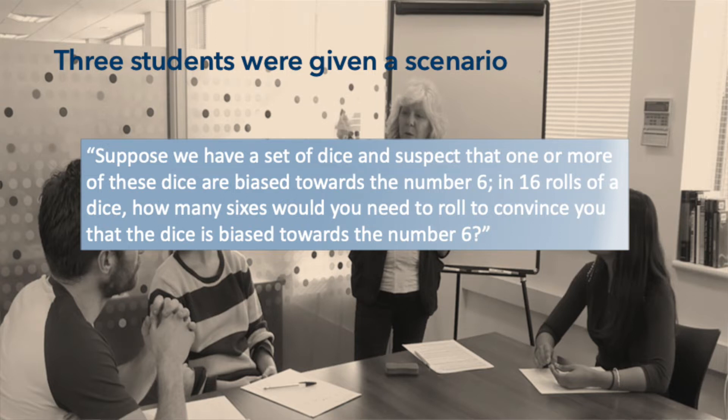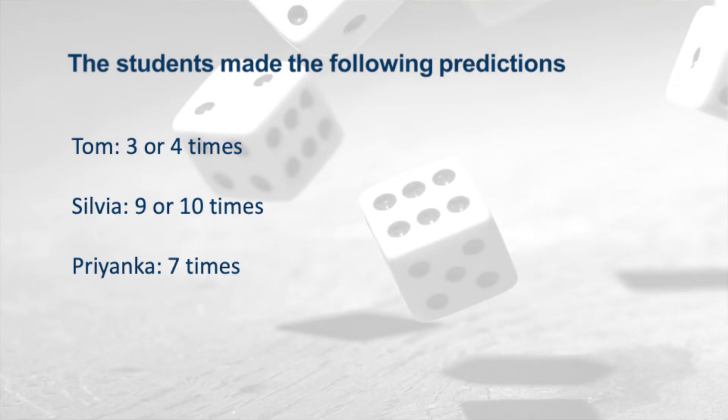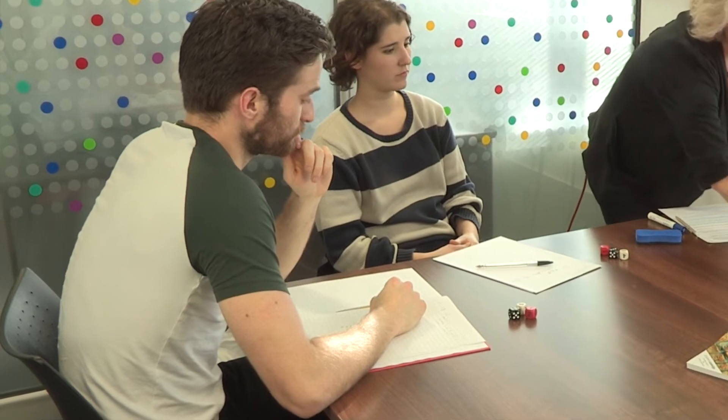Who would like to start? So what I would like you to do then is to take, I will give you 3 dice, 3 different colours because that will make it easy to record. And I would like you to roll each of these dice 16 times and record how many 6's you get for each one.